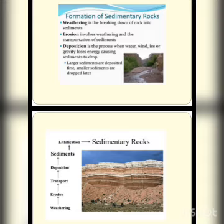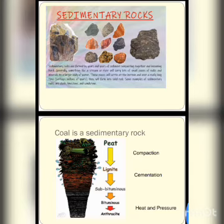So by this we know what sedimentary rocks are and how they are formed. Now the question is: what are examples of sedimentary rocks? Examples are shale, limestone, sandstone, and coal. Coal is also an example of a sedimentary rock — it is formed by the decay of dead plants under the earth, and after millions of years it converts into coal, which we use for heating purposes as well as in industries.